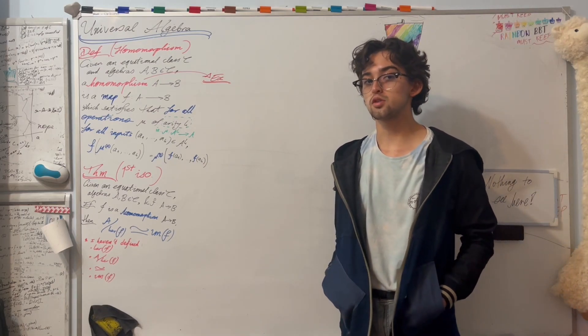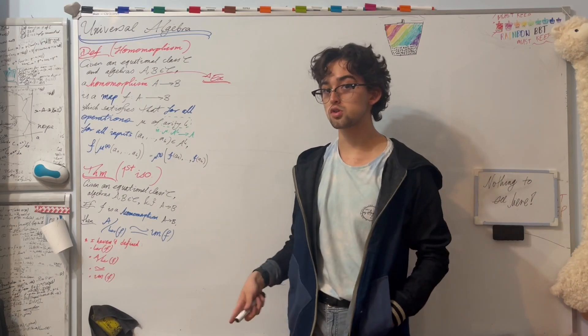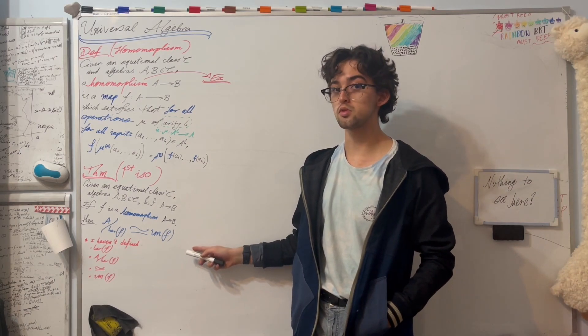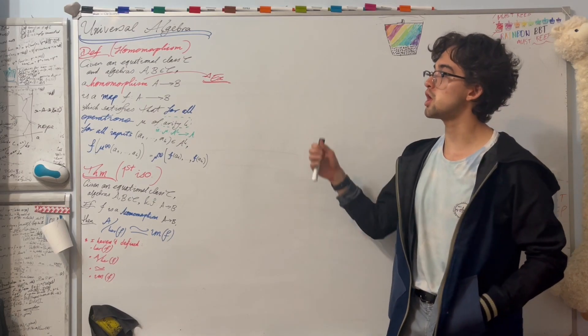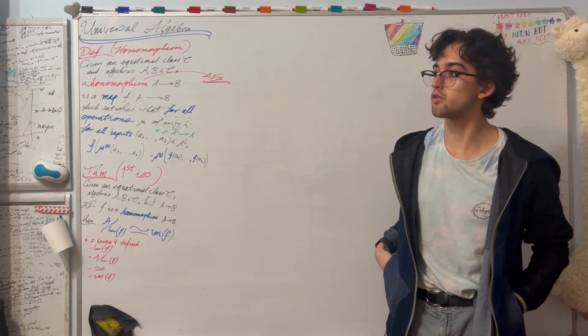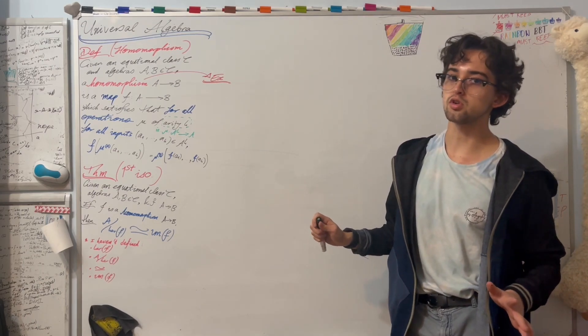what it essentially tells us is that theorems that seem to occur in every algebraic structure, like the first isomorphism theorem, do occur in every algebraic structure, at least according to the rules in universal algebra.